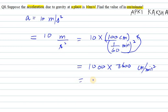Or you can write it as 36 into 10 raise to power 5 centimeter per minute square. Or even you can write it as 3.6 into 10 raise to power 6 centimeter per minute square. So that's your answer for question number 8.